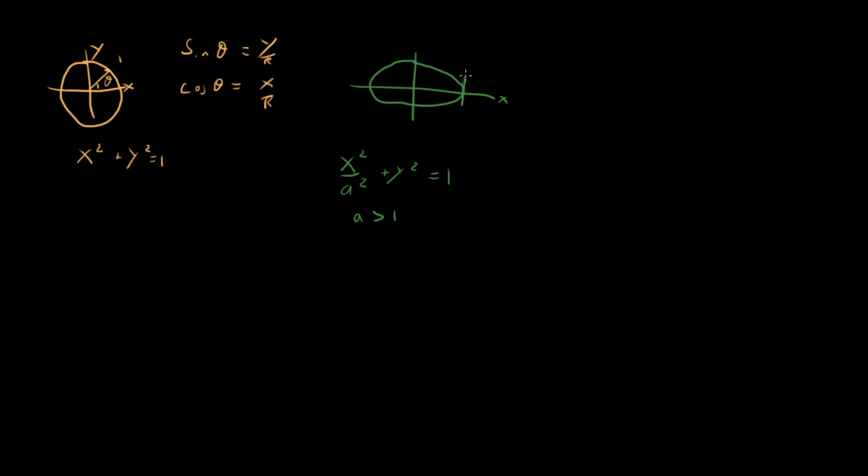So we have an ellipse that looks something maybe like this. On the x-axis, it comes out to some length a. On the y-axis, it goes out to some length b, which is equal to 1. So this is our ellipse.